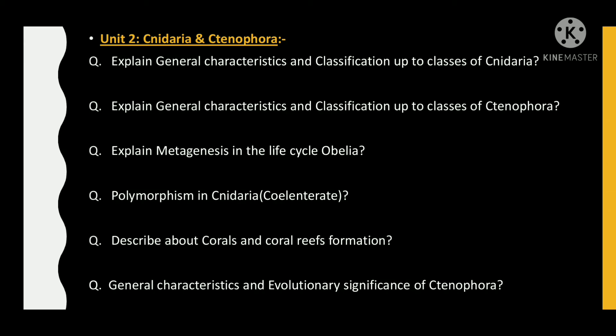Then the next one is: explain metagenesis in the life cycle of Obelia. Then the next question is: polymorphism in Cnidaria (Coelenterata), which includes any invertebrate of the phylum Cnidaria having a sack-like body with a single opening — the mouth — occurring in polyp and medusa forms. Coelenterates include hydra, jellyfish, and corals.